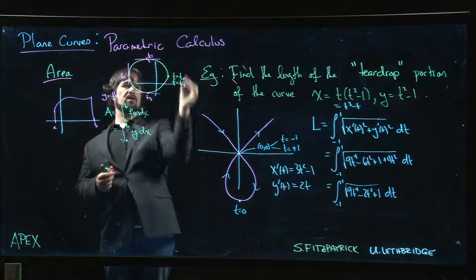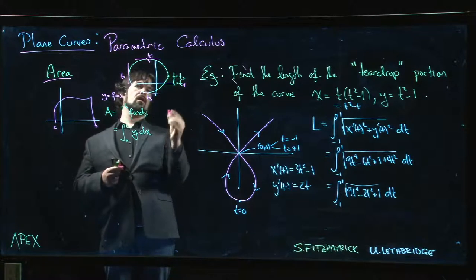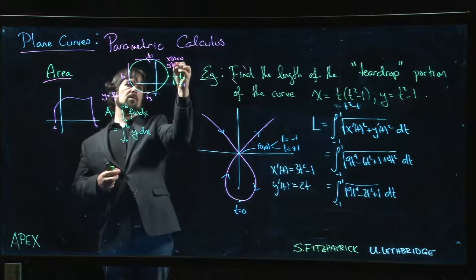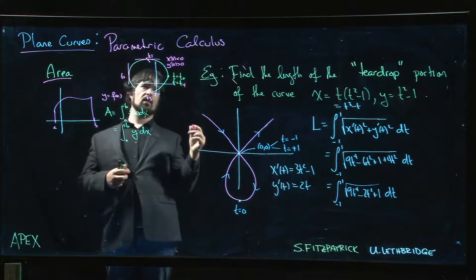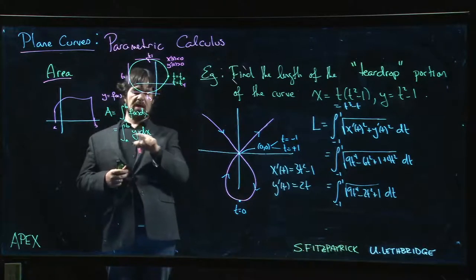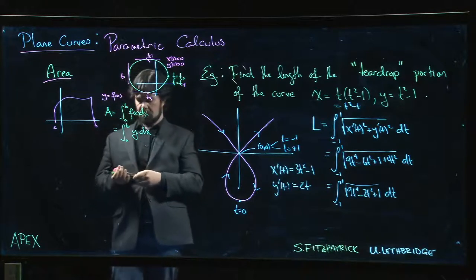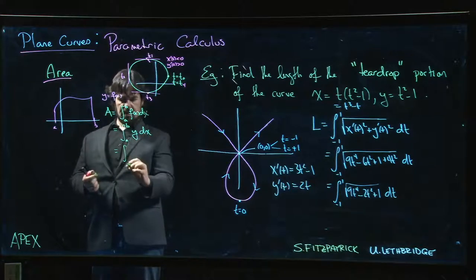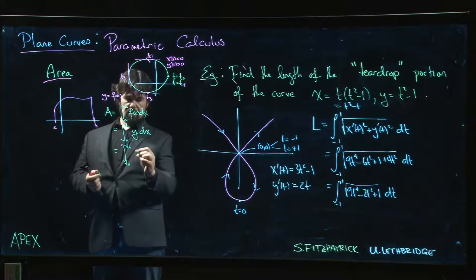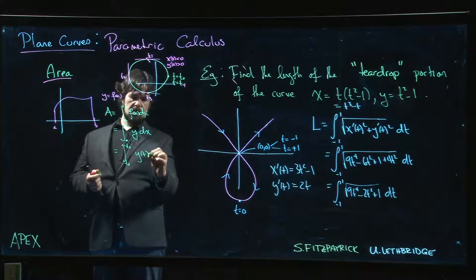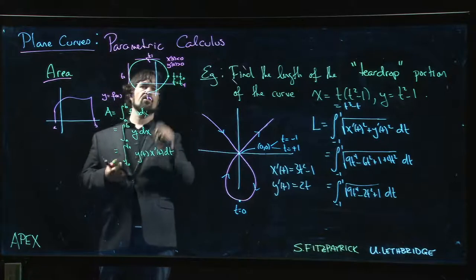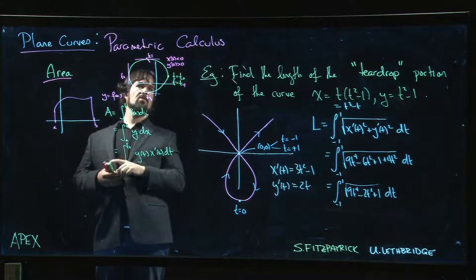Between t₀ and t₁, notice that x'(t) is less than zero, y'(t) is bigger than zero. So that means y dx—the idea here is now if we parameterize, if x and y are functions of t, so a and b now come from some values t₀ to t₄. y(t) dx will be x'(t) times dt.